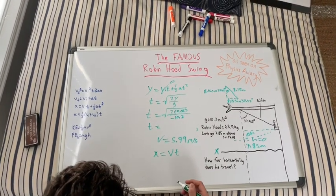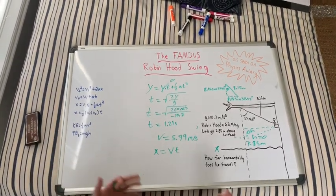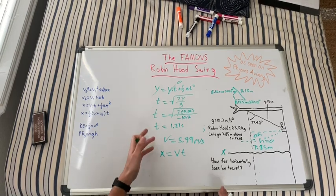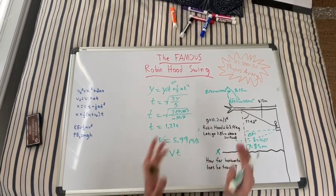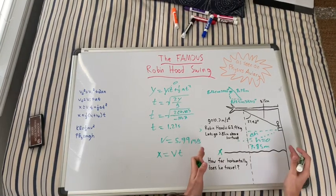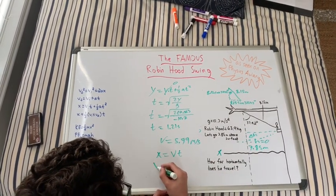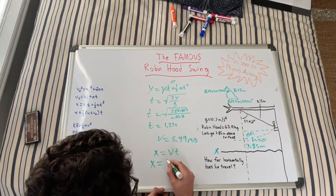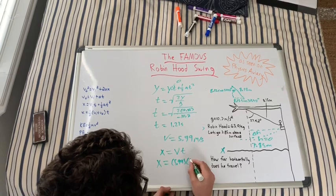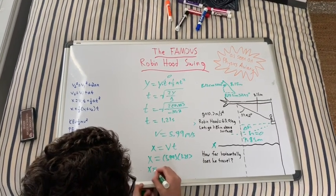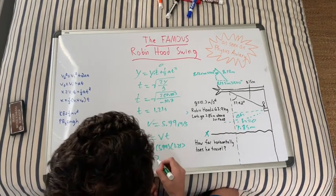So now we've finally found our time and we can find the horizontal displacement for this half. Because we don't want to forget, we need to find this whole horizontal displacement and we're only getting this kinematics part. So x is going to equal 5.99 times this time, 1.21, so we get 7.26 meters.